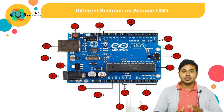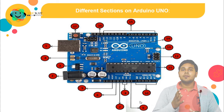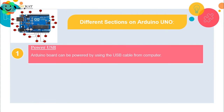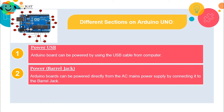Number one is Power USB — you can see it on the left side of your screen. Power USB is used to power the Arduino board. We also have the Power Barrel Jack, through which we can directly supply the Arduino board using a DC supply or a power adapter.